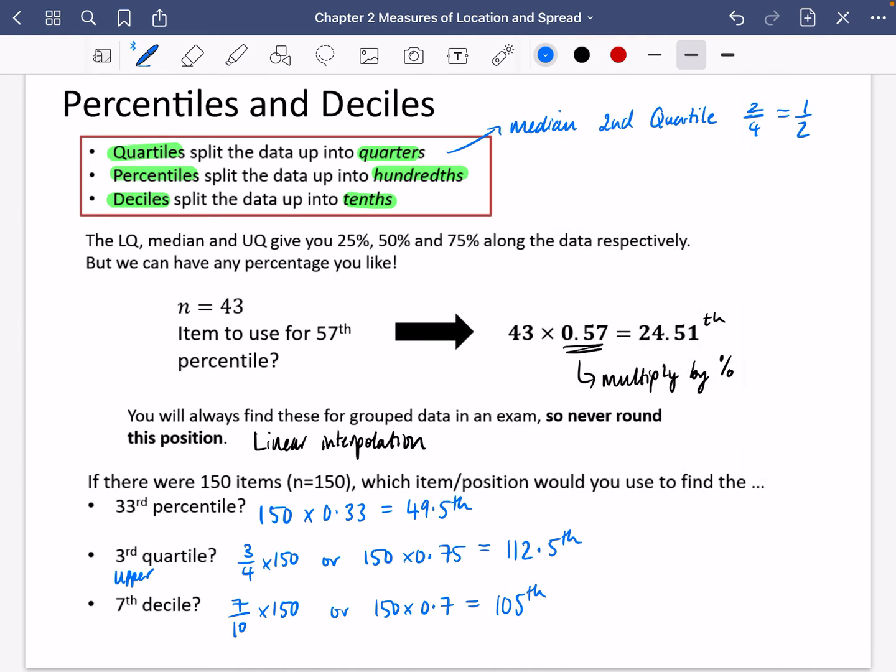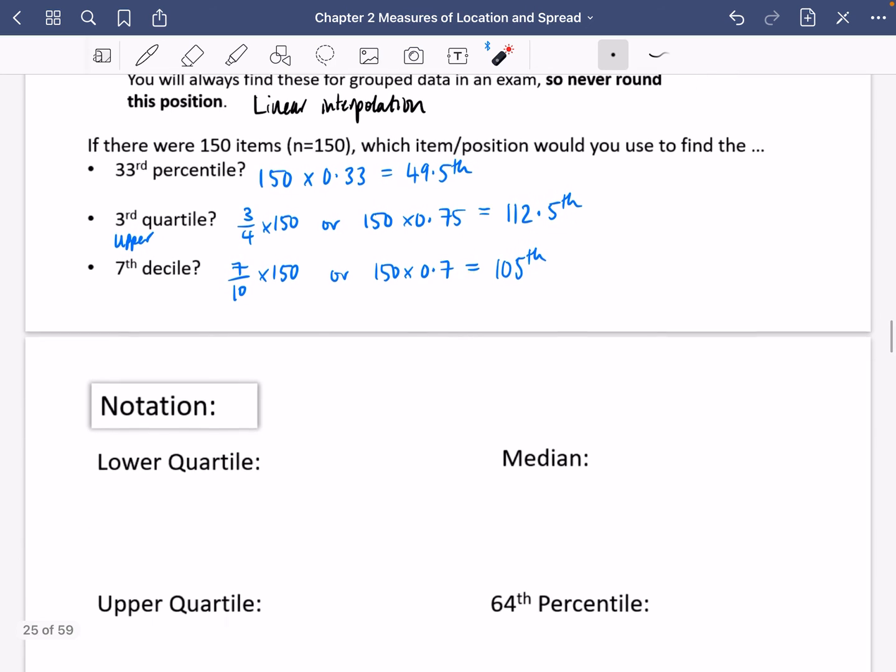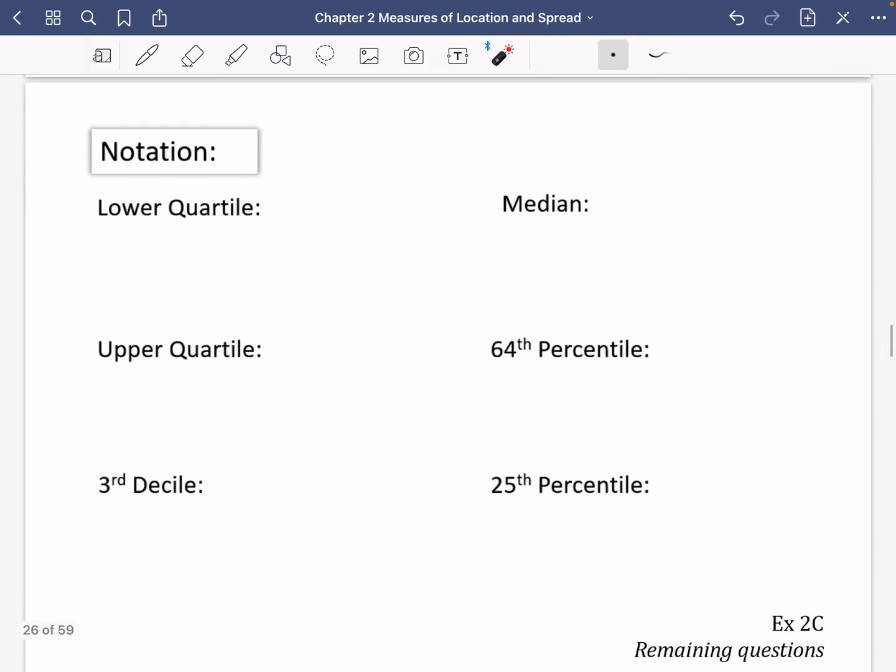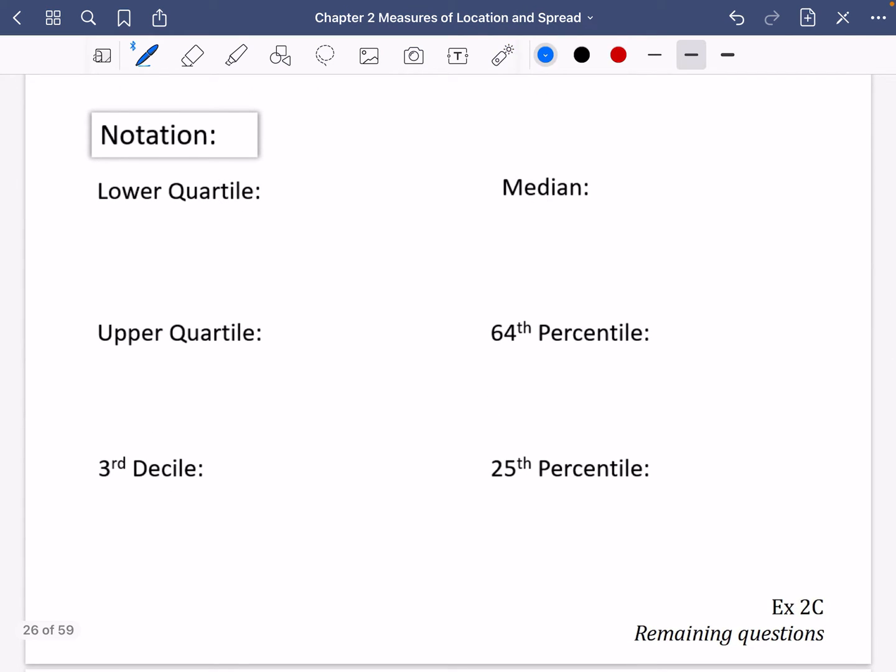We don't really like to use these long words where we can avoid them, so I wanted to quickly talk to you about some of the notation that we might use. For the lower quartile, we have so far used the notation LQ, which you may still come across, but you also might refer to it as Q₁, and that really means it's the first quarter of the way along.